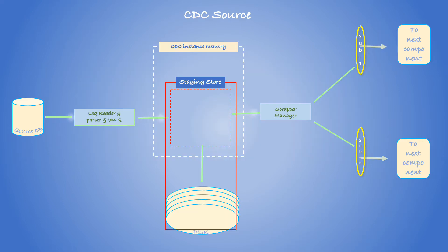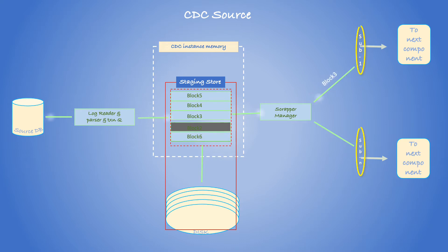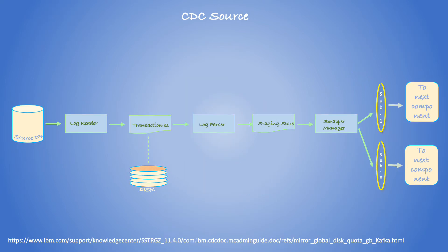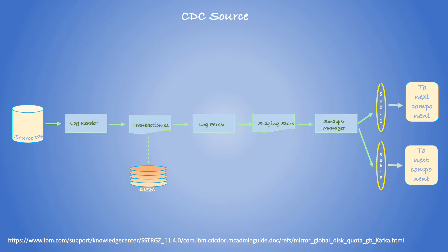This diagram illustrates how, when memory isn't enough, parsed and committed data are spilled to disk from memory. This diagram also illustrates how a transaction queue can grow and shrink dynamically depending on the nature of transactions. A large in-scope and uncommitted transaction will force the CDC transaction queue component to store the transaction on disk. A transaction with unmapped or out-of-scope tables will be stored as an empty transaction. We will discuss how to set the max size for transaction queue in a later slide.